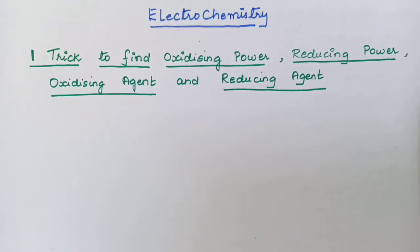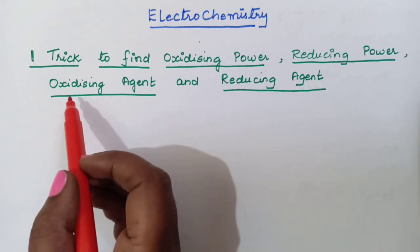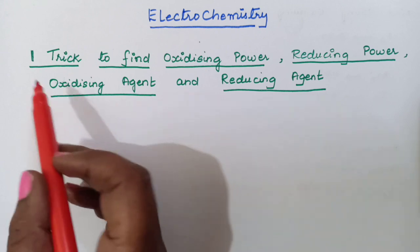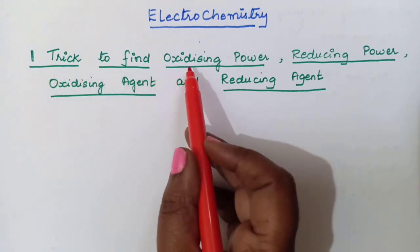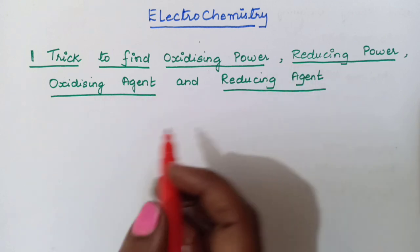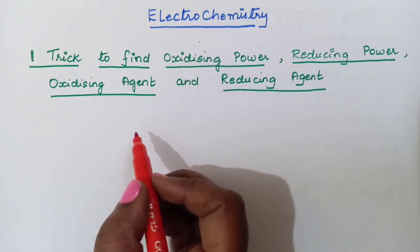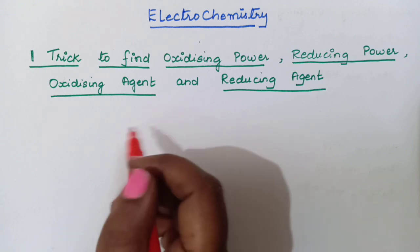Hello students, welcome to Ishwari Taniksha channel. In this video, we are going to see a super trick to find out oxidizing power, reducing power, strong oxidizing agent and strong reducing agent. In electrochemistry, in NEET examination as well as JEE examination, you can see this type of questions will be given.